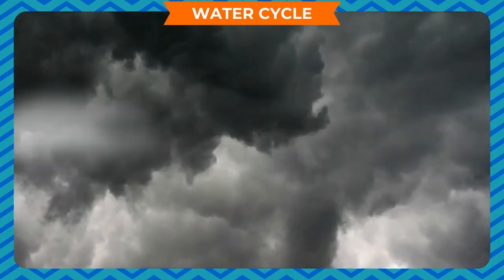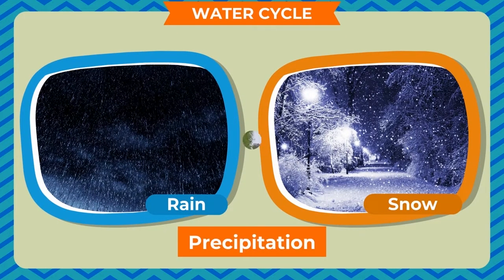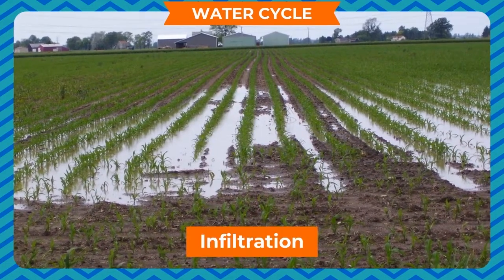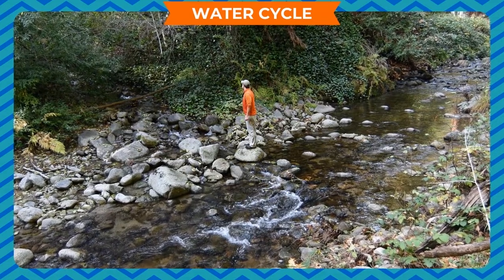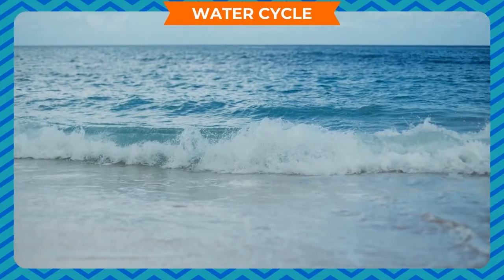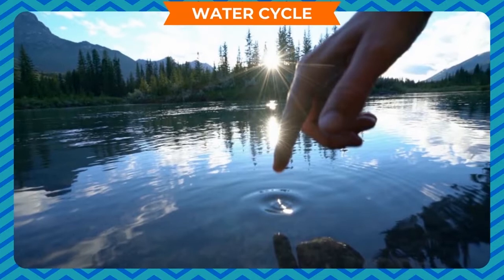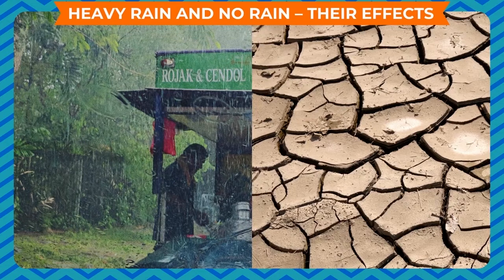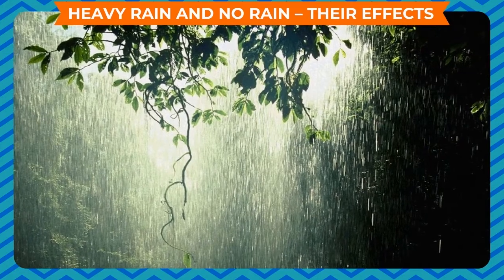When clouds meet cold air, they fall on the earth as rain or snow — this process is called precipitation. A part of this water seeps down through rocks by the process of infiltration. Some of the filtered water may get trapped between rocks as groundwater. However, most of the water runs down and mixes into the sea — this process is called surface runoff.